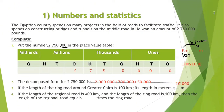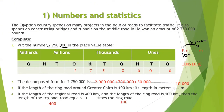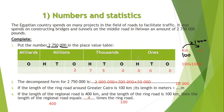Number 4: if the length of the regional road is 400 kilometers and the length of the ring road is 100 kilometers, then the length of the regional road equals how many times the ring road? The regional road is 400 and the ring road is 100, so the regional road is four times bigger than the ring road.